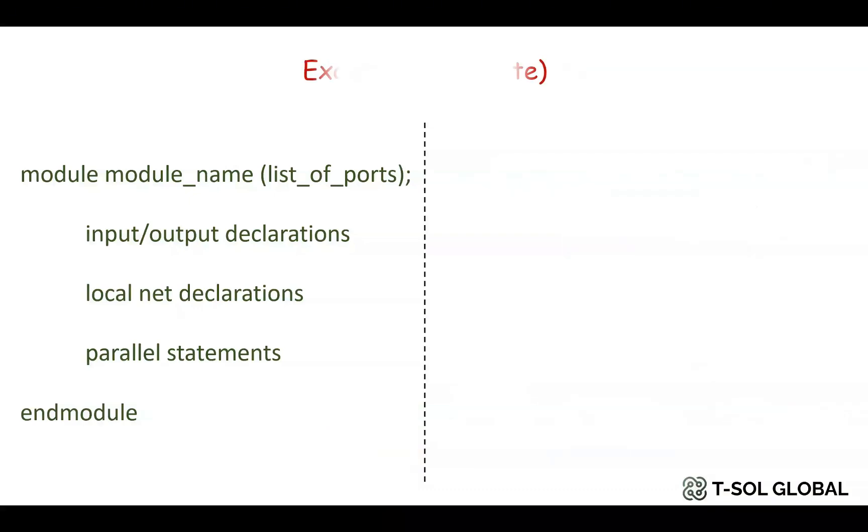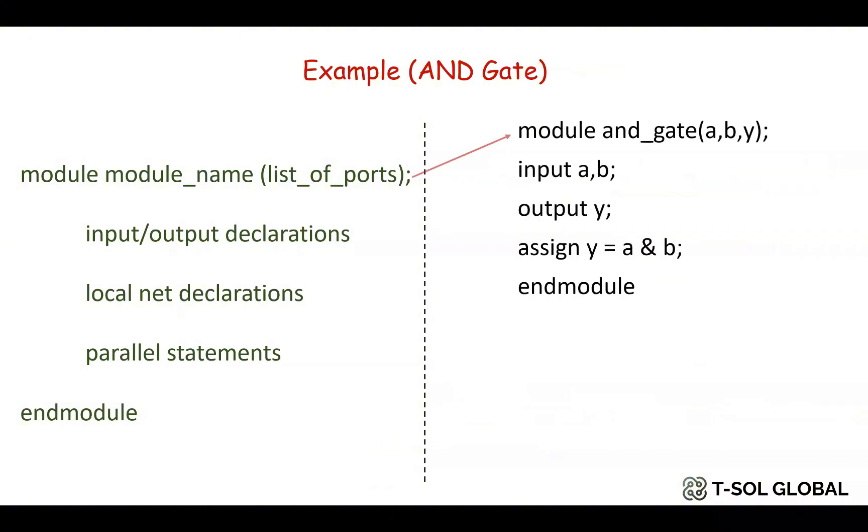Now we will look at some example Verilog codes. So the first example is an AND gate. Here we have the module name as andgate, then we declare the input output ports as a, b, y where inputs are defined as a, b and output is defined as y.